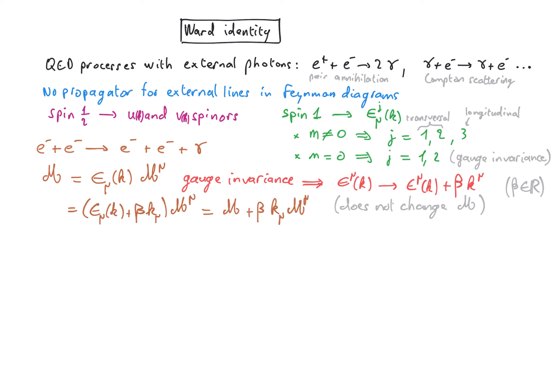Beta is arbitrary so this must be zero and that gives us the Ward identity. So what this means is that if we have a process with an external photon and we replace in the expression of the amplitude the polarization vector for the external photon by the momentum of the photon then we should get zero. That's called the Ward identity and that generalizes to processes with more than one external photon.